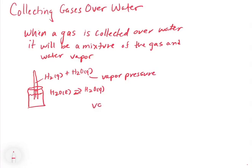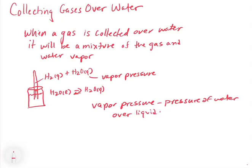We call this the vapor pressure. The vapor pressure is the pressure of water vapor over liquid water at a given temperature. For example, at 19 degrees Celsius, you can go to a table and look up the vapor pressure of H₂O gas inside the mixture. This is not something you memorize — it's something you look up.